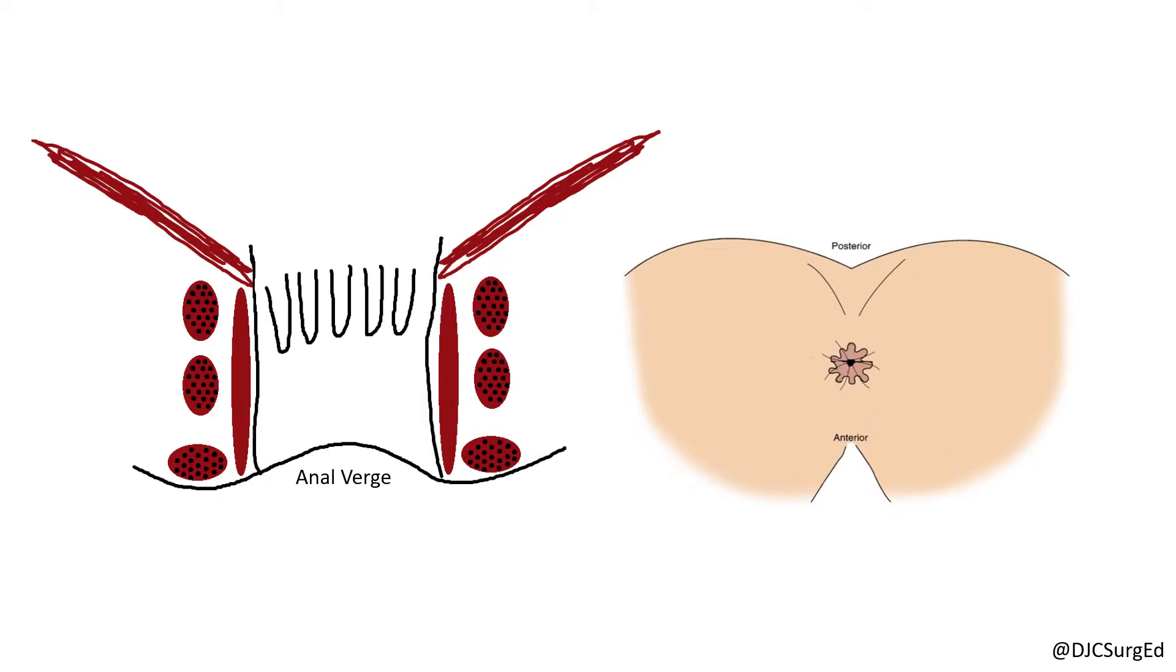The anal margin consists of the perianal skin over a 5-centimeter radius from the anal verge. This consists of keratinizing and hair-bearing squamous epithelium.